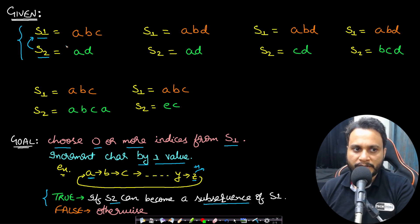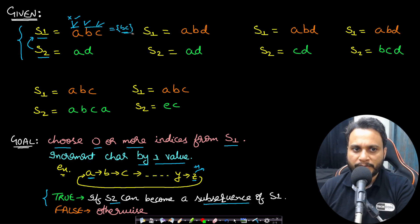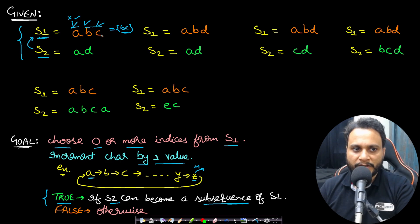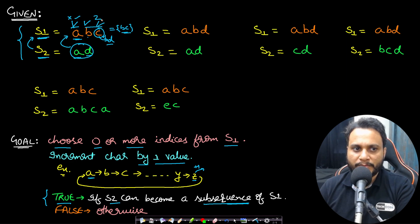A subsequence means you can choose to select or not select items, maintaining order. So in Example 1 with 'abc' and 'ad': I can match 'a' with 'a', then 'b' and 'd' are not matching. But if I increment 'c' to 'd' by doing plus 1, then 'd' and 'd' will match. So s2 is present as a subsequence in s1 after choosing index 2 (a=index 0, b=index 1, c=index 2). By increasing index 2 by 1 we can match 'a' and 'd', so the answer is true.